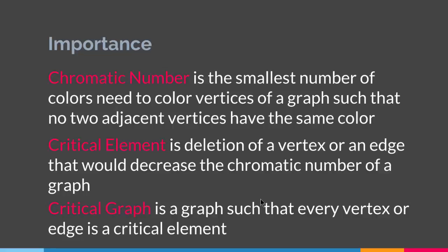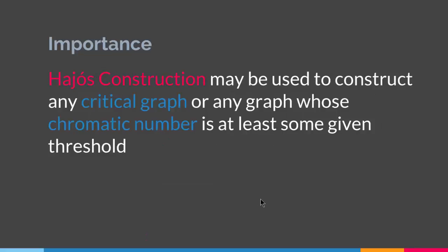Using these ideas, we use Hajos Construction in order to construct critical graphs, or any graph whose chromatic number is at least some given threshold. So Hajos Construction, besides being important as a graph operation that creates a new graph out of two graphs, is also important in constructing critical graphs. We will talk about these ideas in later chapters when we discuss graph labeling and graph coloring.